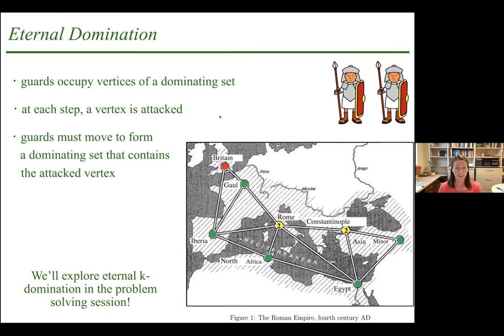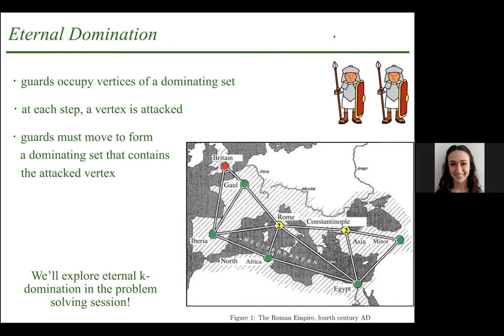Someone wonders if the farsighted model is somehow akin to the graph complement of the nearsighted model, though the traversal rules would change if you used those edges. There's also a question about whether tree width and path width come up much when figuring out pursuit parameters. It depends on the problem: node search number equals path width plus one, so if you know one, you know the other. For cops and robbers and tree width, there's not a close relationship. Many of these problems are NP-hard — easy to describe, but hard to solve.